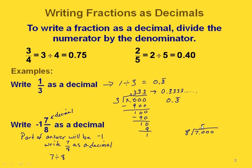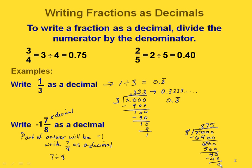Comparing 8 to 70: 8 goes into 70 eight times. Then 8 times 8 is 64. If we subtract, we get 6 — bring down a zero to get 60. 8 goes into 60 seven times. 8 times 7 is 56. Subtract, we get 4 — bring down a zero to get 40. 8 goes into 40 five times; subtract and we get a remainder of zero, so we're done. The fractional part is 875 thousandths. That means negative 1 and 7 eighths in decimal form is negative 1.875.